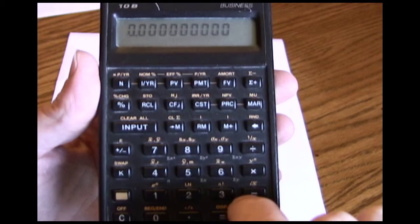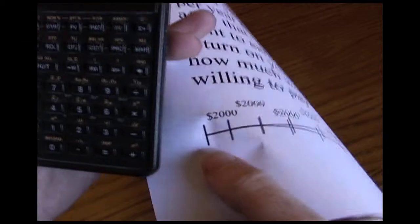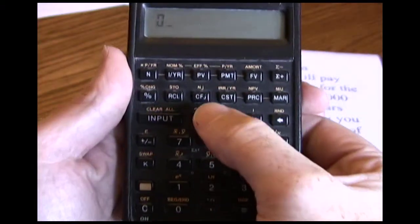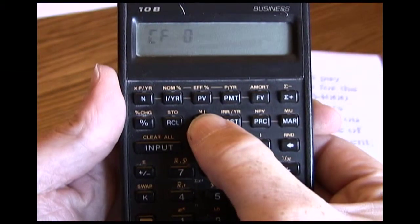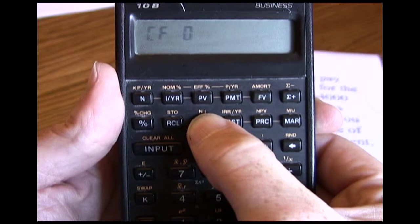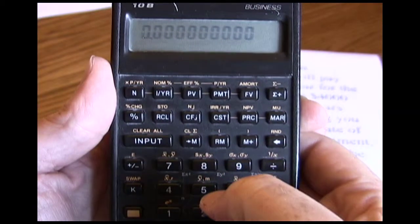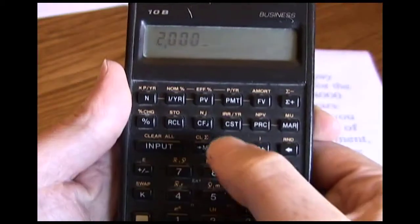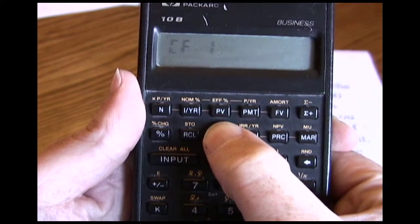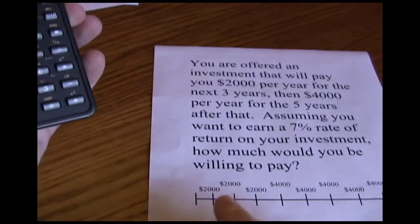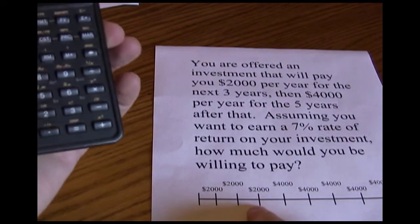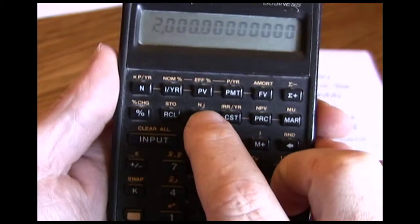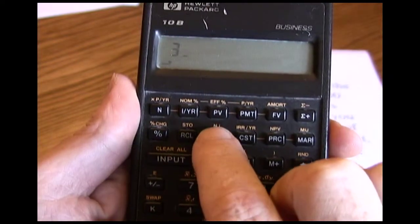Now we want to put in the cash flows. Our first cash flow is year zero — remember there's no cash flow in year zero, so we enter zero and use the CFJ button. When we press CFJ, you can see it says CF zero, recording that zero for our initial cash flow. Our next cash flow is $2,000, so we press $2,000 and press the cash flow button — it tells us the first cash flow is $2,000. Now we have this cash flow for three periods. Instead of entering it separately, we tell the calculator we have a frequency of three using the N-sub-J button — that's a shift function, so we do 3, Shift, N-sub-J.